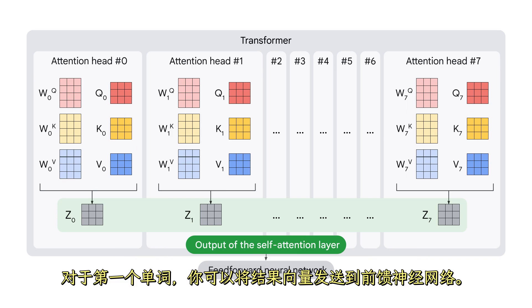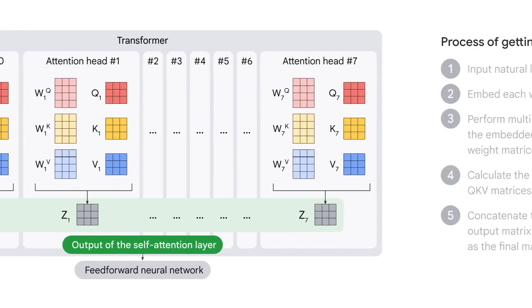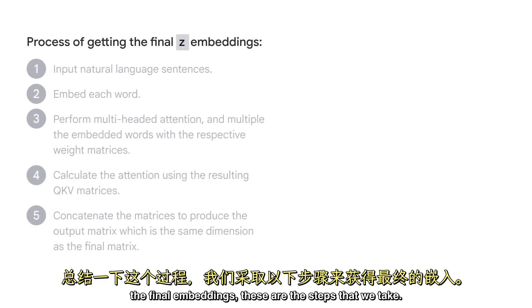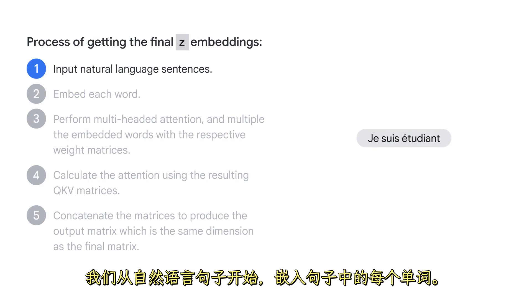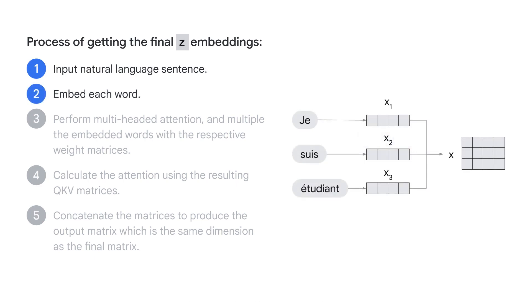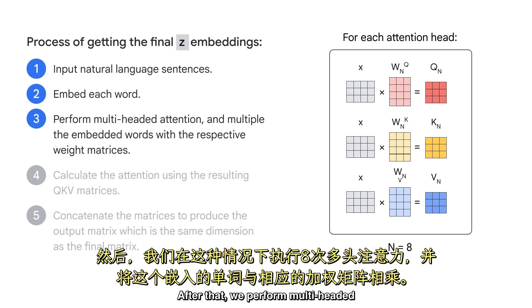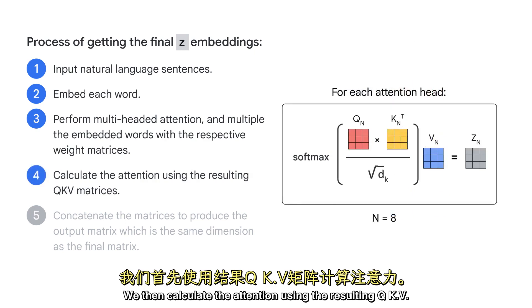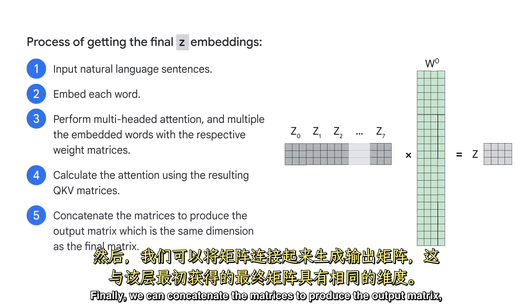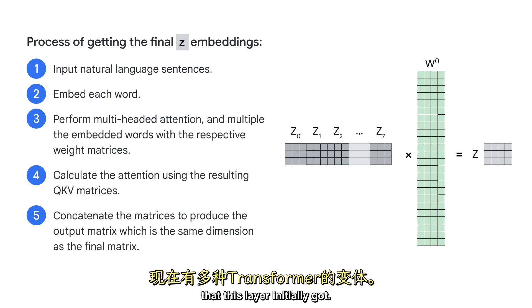You can send along the resulting vector to the feed-forward neural network. To sum up this process of getting the final embeddings, these are the steps that we take. We start with the natural language sentence, then embed each word in the sentence. After that, we perform multi-headed attention — eight times in this case — and multiply this embedded word with the respective weighted matrices. We then calculate the attention using the resulting QKV matrices. Finally, we concatenate the matrices to produce the output matrix, which is the same dimension as the final matrix that this layer initially got.